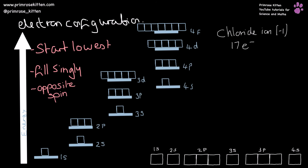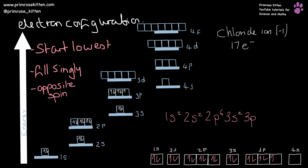We can treat ions in exactly the same way as atoms. A chloride ion has 17 electrons — chlorine gains one electron to become Cl⁻. Filling the same way gives: 1s², 2s², 2p⁶, 3s², 3p⁵.